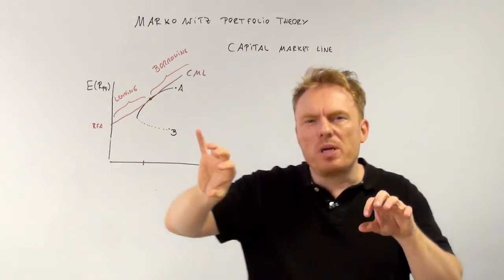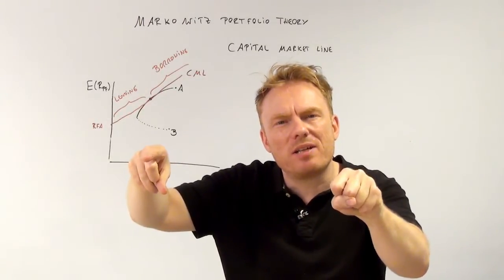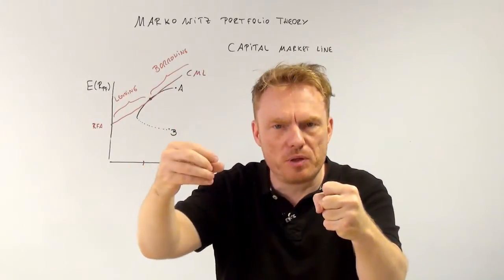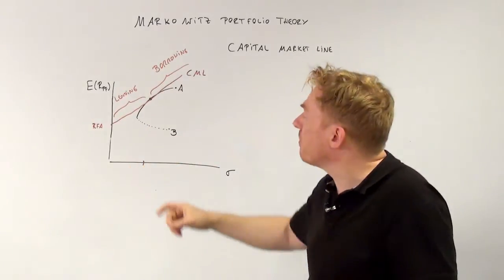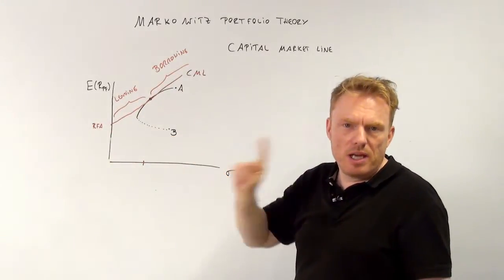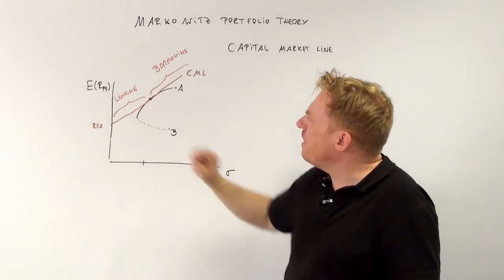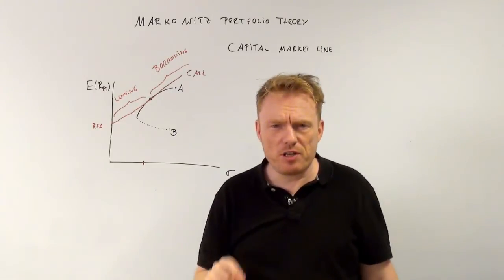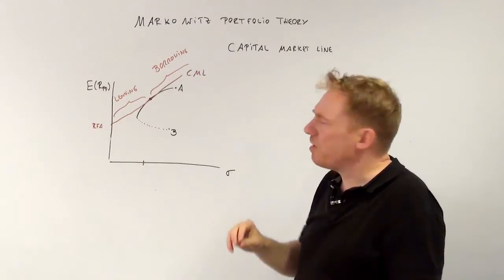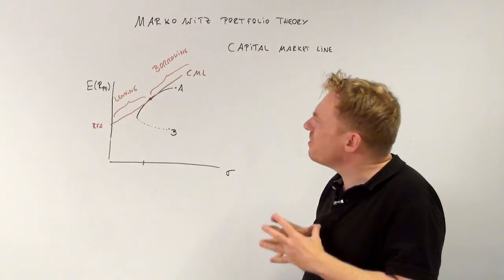So we have assets A and B, a portfolio of A and B, and a risk-free asset — and this risk-free asset is combined with the portfolio of A and B. This gives us the capital market line, and the capital market line is tangent to the efficient frontier. The point at which it is tangent is the market portfolio.